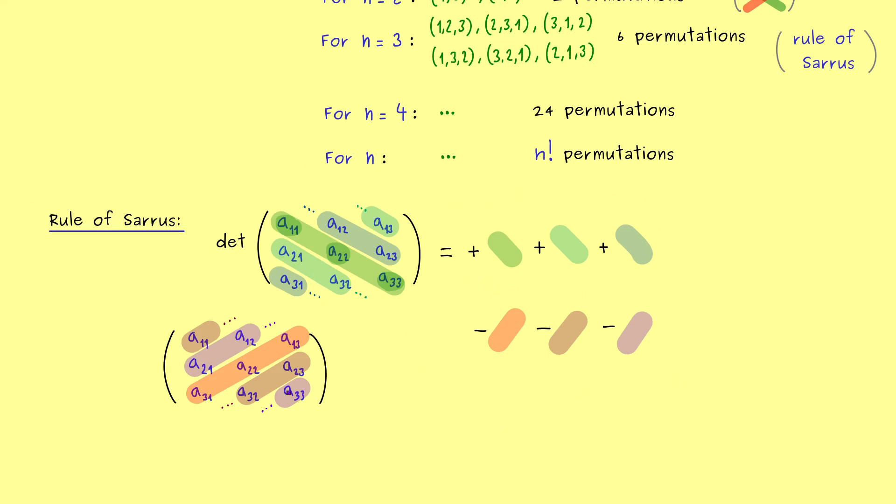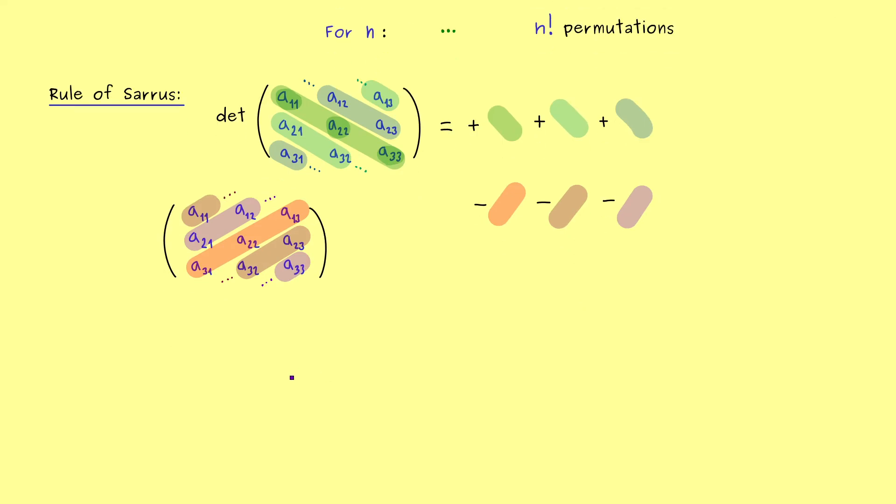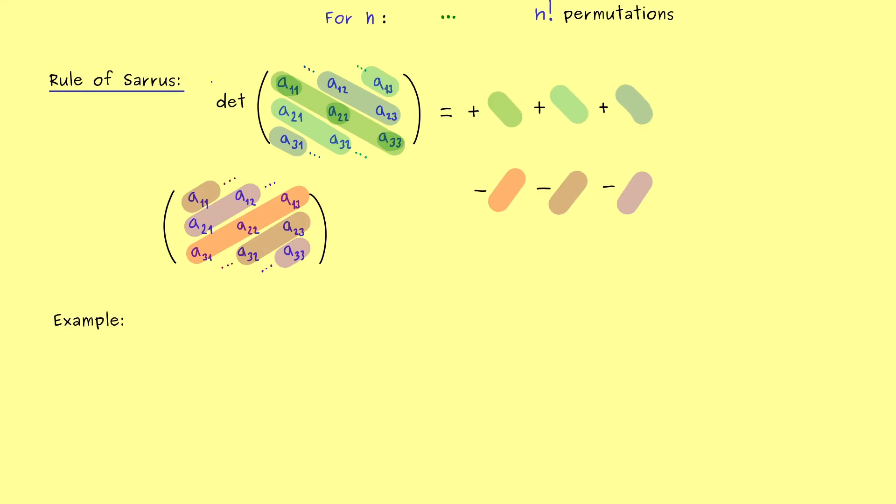It tells you how you can calculate the determinant of a 3x3 matrix without forgetting any terms. Hence it's something that one can quickly apply on paper. In other words a computer will not have any advantage with this additional rule but a human has.